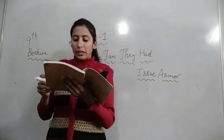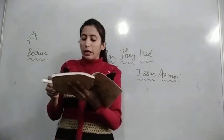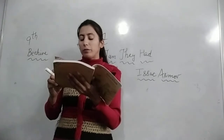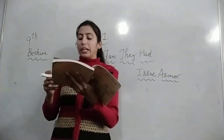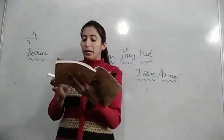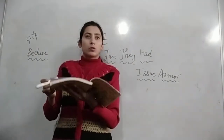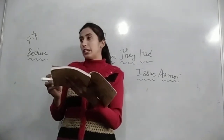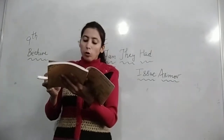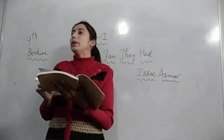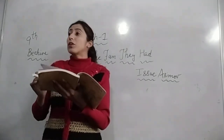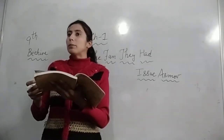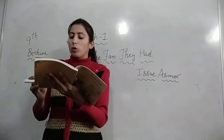Margie even wrote about it that night in her diary, on the page heading 17 May 2157. Margie ने यह सब उस रात अपनी diary में लिखा. आज कौनसा चल रहा है — 2021 चल रहा है, तो यह 2157 Miss Future की बात है. She wrote: today Tommy found a real book. उसने diary में लिखा कि आज Tommy को एक real book मिली — क्योंकि उन्होंने तो कभी real book देखी नहीं है. Future की बात करें तो उन्होंने तो screen पर ही books देखी है. एक most very old book — बहुत पुरानी book थी.